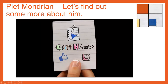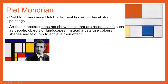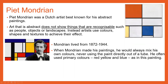That's a lot of information all about Pierre Mondrian. Pierre Mondrian was a Dutch artist best known for his abstract paintings. Art that is abstract does not show things that are recognisable, such as people, objects or landscapes. Instead, artists use colours, shapes and textures to achieve their effect. Mondrian lived from 1872 to 1944. When Mondrian made his paintings, he would always mix his own colours, never using the paint directly out of a tube. He often used primary colours — red, yellow and blue — as in this painting here.